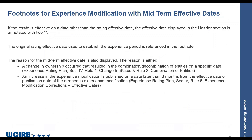There are instances where re-rates are not effective as of the original issue date, but have a midterm effective date. Two instances apply: first, where there has been a change in ownership, and we're either combining or decombining experience due to a change that occurred midterm within the experience modification effective period. In those instances, the effective date will have two asterisks indicating the effective date of this experience modification is different than the established rating date.